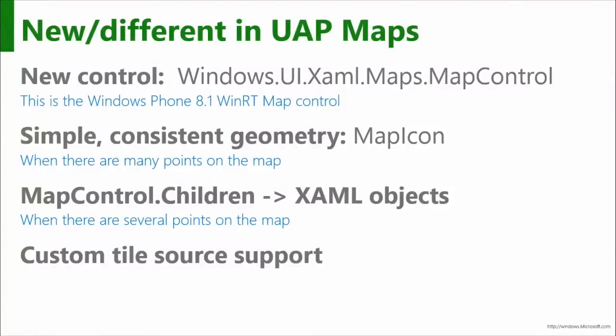You can use custom tile source support. This is very interesting because when the user pans around the map and zooms in and out, the image you're seeing is actually composed of a number of different tiles. They normalize the whole surface of the planet into squares of tiles. At zoom level one — the whole world view — that's actually four tiles. You go to zoom level two and it splits each tile into another four tiles, and it keeps doing that all the way to zoom level 20, which is right down at street level. You can override these tiles and provide your own.